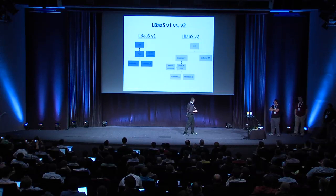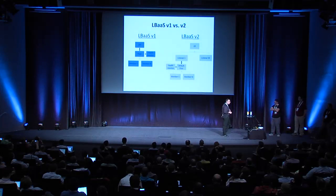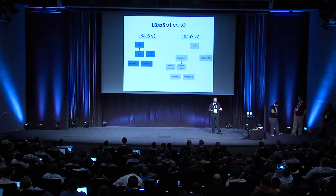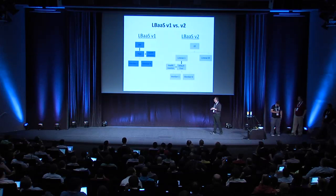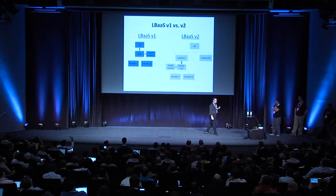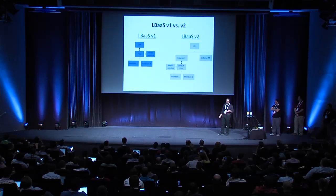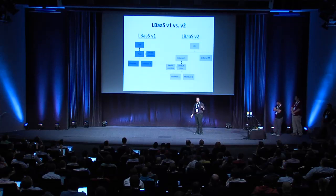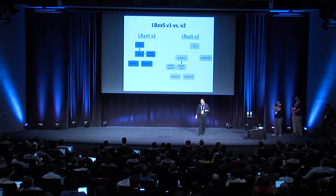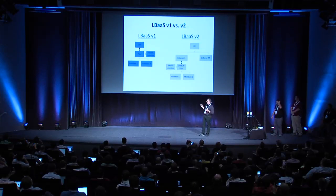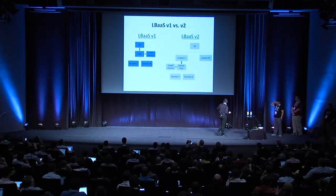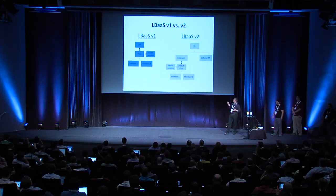In order to do that, the first thing we needed to do was fix the core model. The original V1 core model had a few shortcomings. The first was that the pool was the root object. If you want to do things like layer 7 content switching with multiple pools, you cannot have the pool as the root object. So we fixed that by creating an object called load balancer as the root object, which has the IP, and then you can attach multiple listeners underneath it. This addresses the requirement to do multiple TCP ports under the same IP, and the pool and health monitor become simple logical objects. We also fixed the health monitor and pool from a many-to-many relationship to a one-to-one relationship.